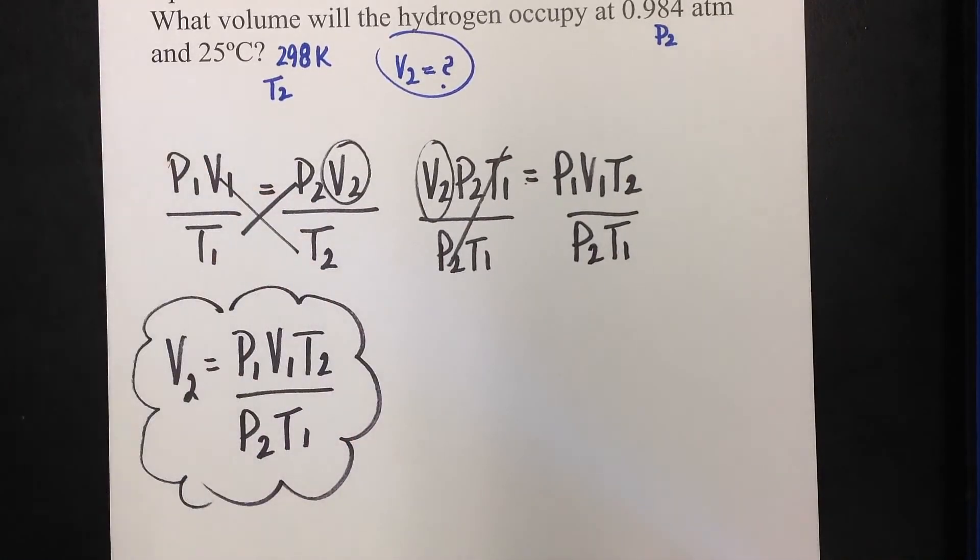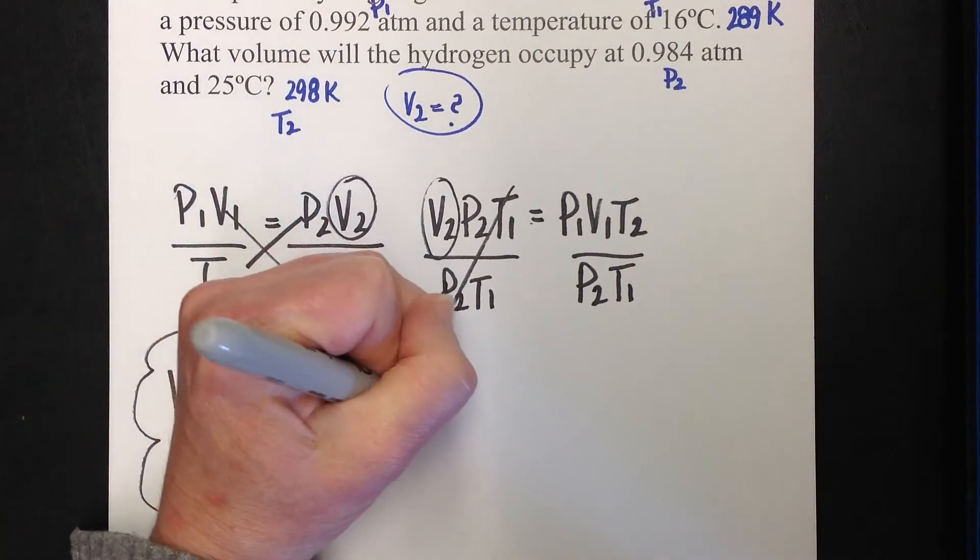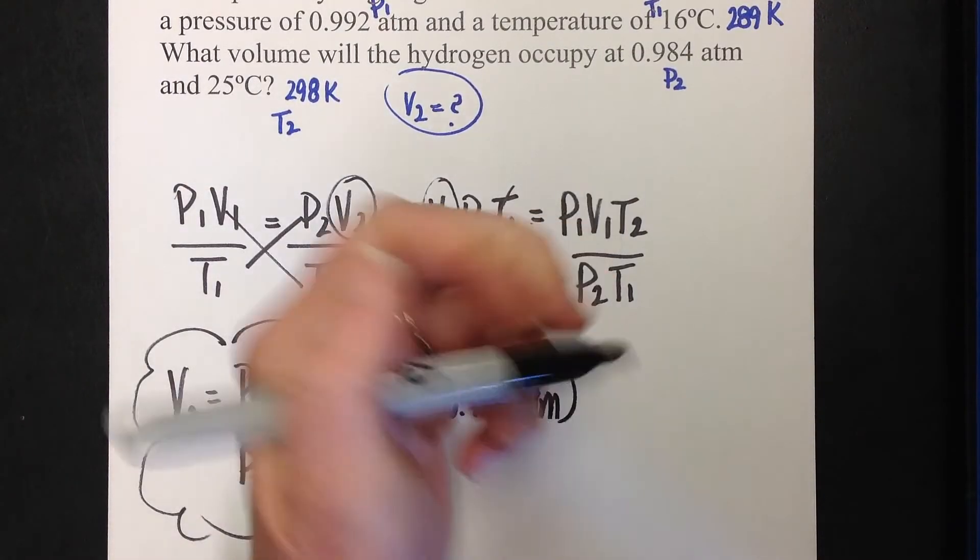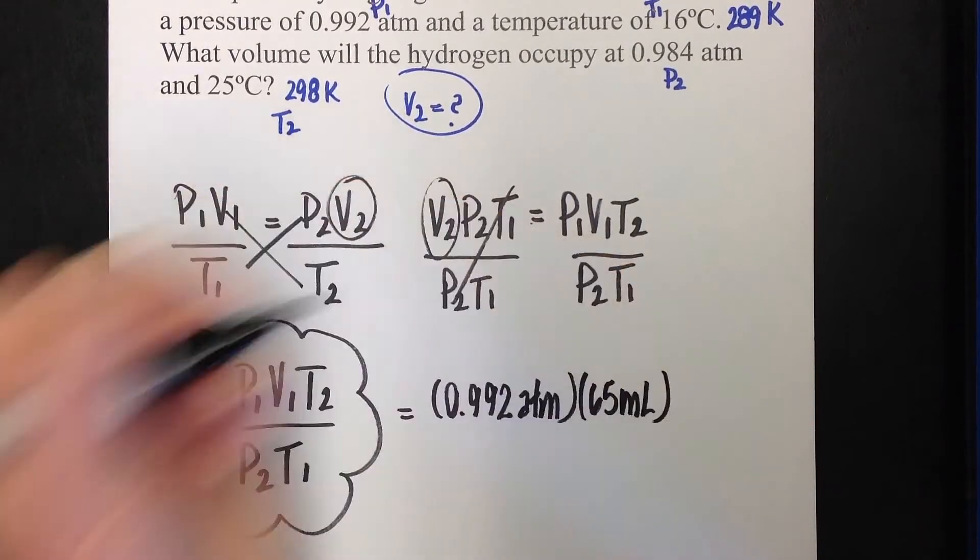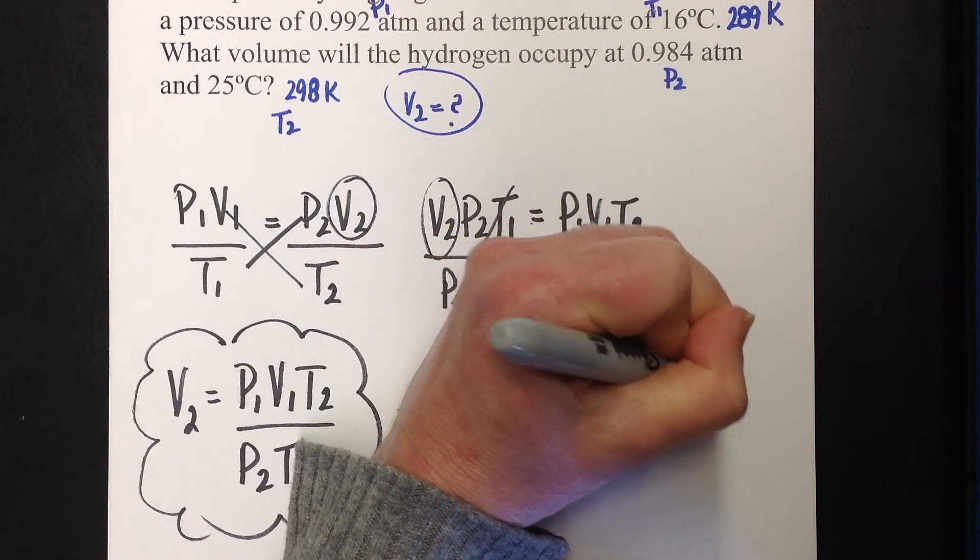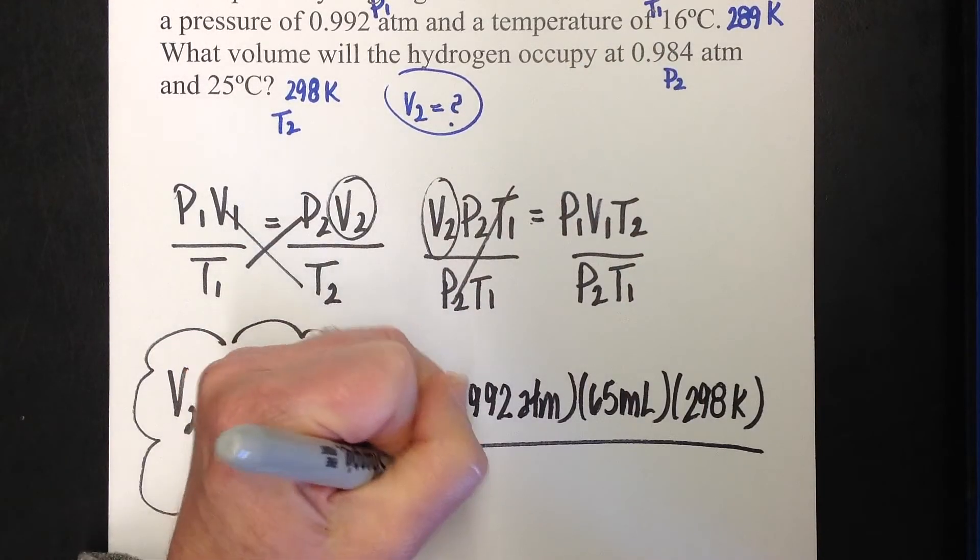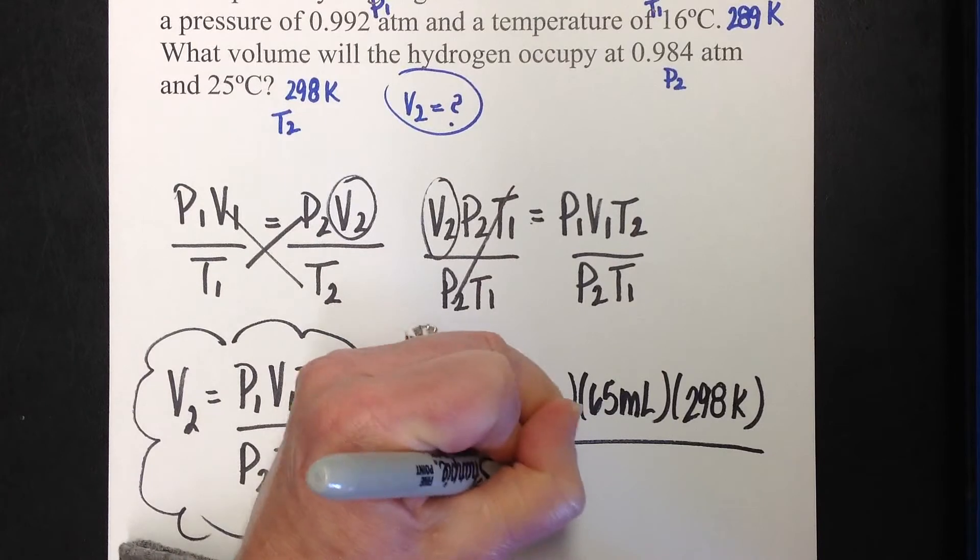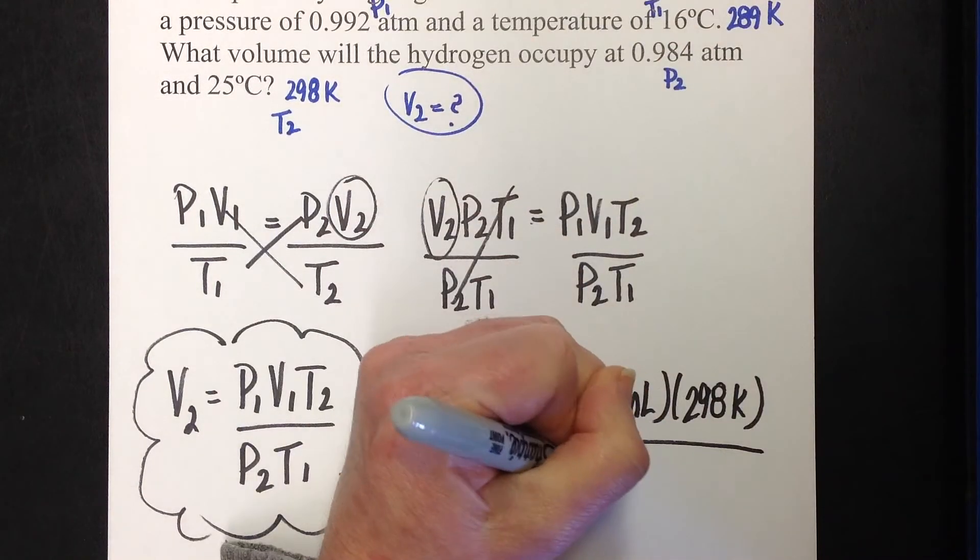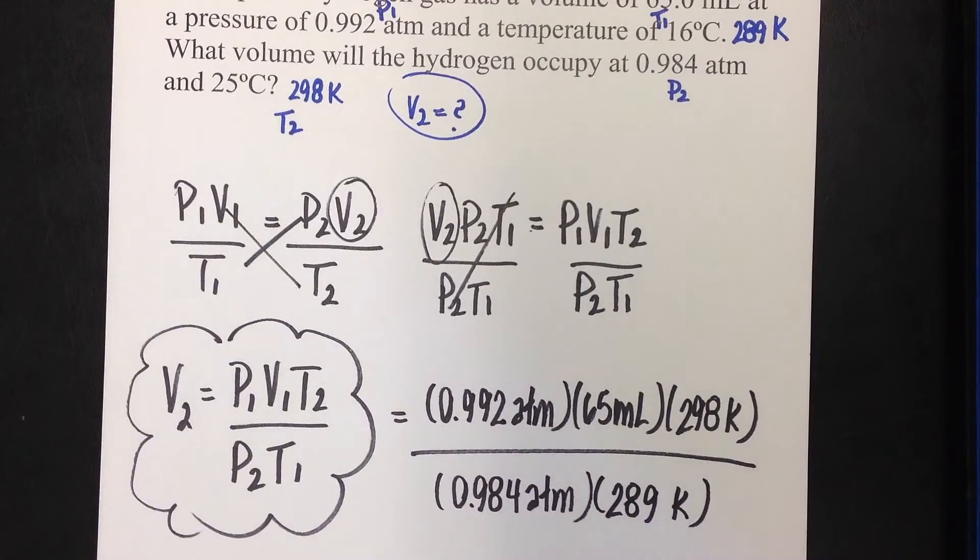Let's plug in. We've already marked everything in this problem, so we just pull it down and put it where it goes. P1 was 0.992 atmospheres. V1 was 65 milliliters. T2 was 298 K. P2 is 0.984 atmospheres. And T1 was 289 K. I'll be careful with that. That's very close to 298, so watch that little detail. That one just about got me.